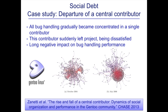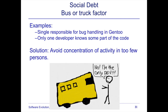This illustrates the so-called bus factor or truck factor: if key developers are hit by a bus and become unavailable, the project suffers. If one developer holds all knowledge about the code and leaves, the project runs into serious trouble. The solution is to avoid concentrating too much activity in too few persons, ensuring knowledge is shared across the team.